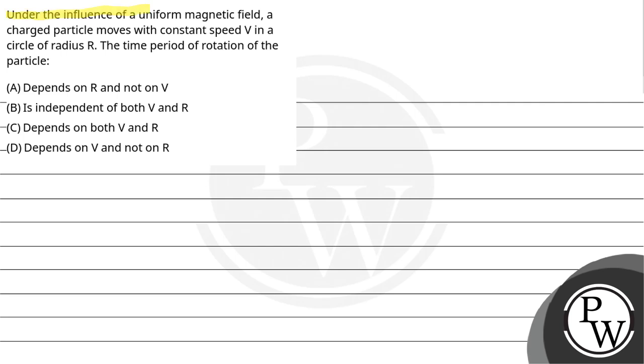Let's read the question. Under the influence of a uniform magnetic field, a charged particle moves with constant speed V in a circle of radius R.